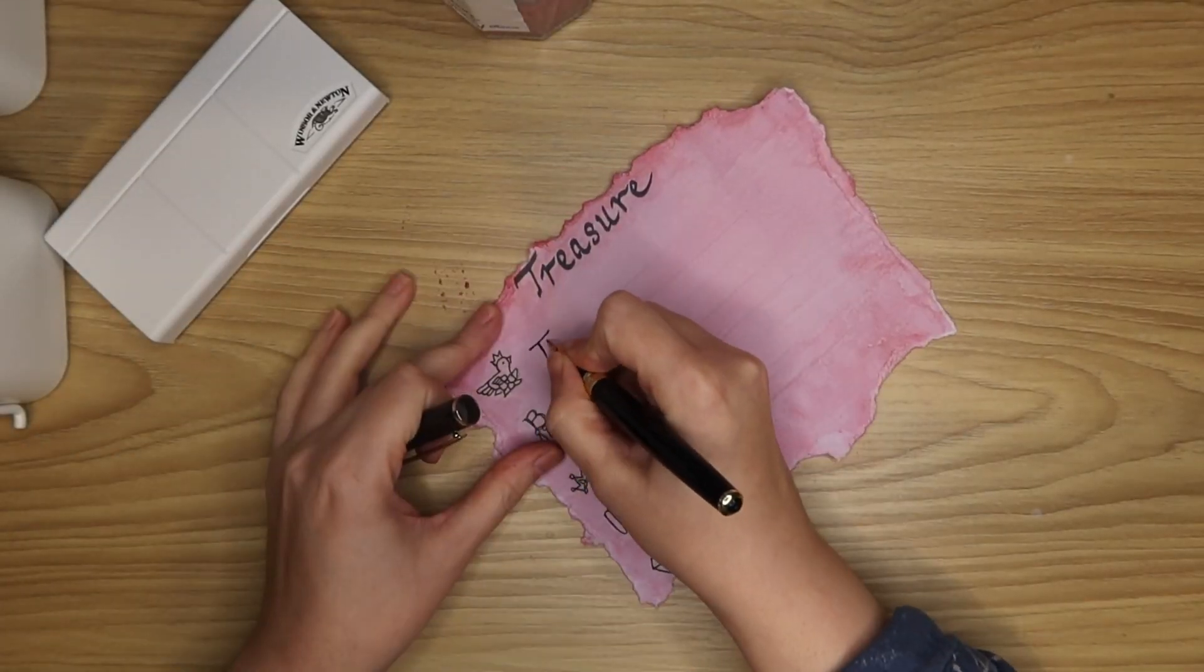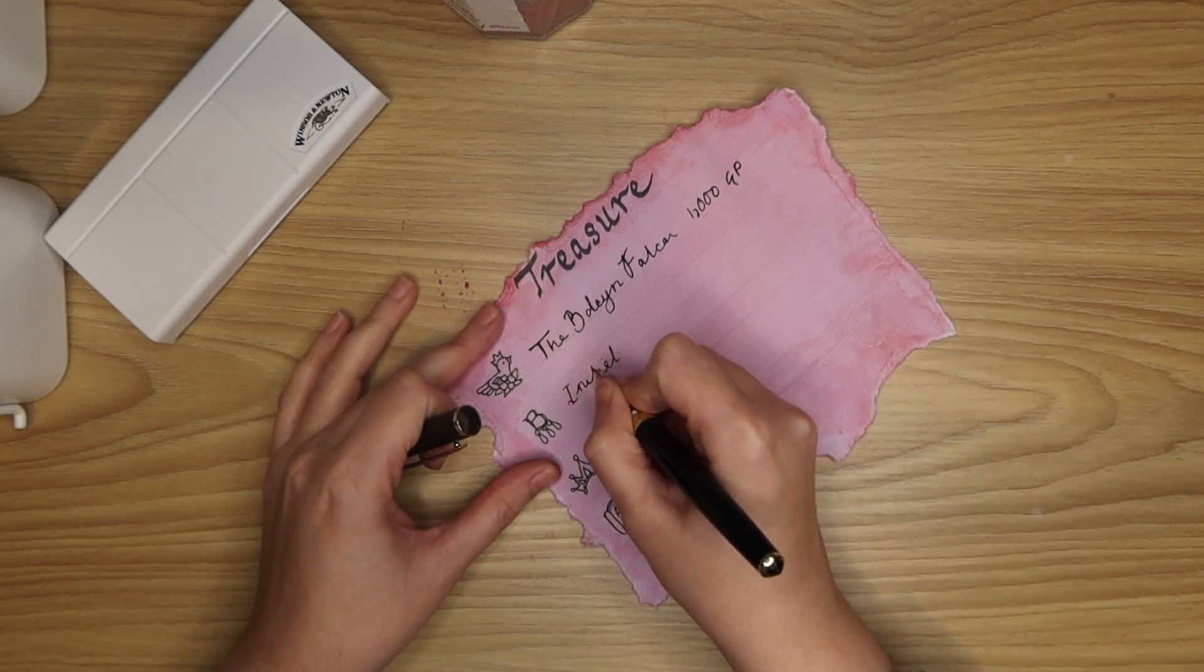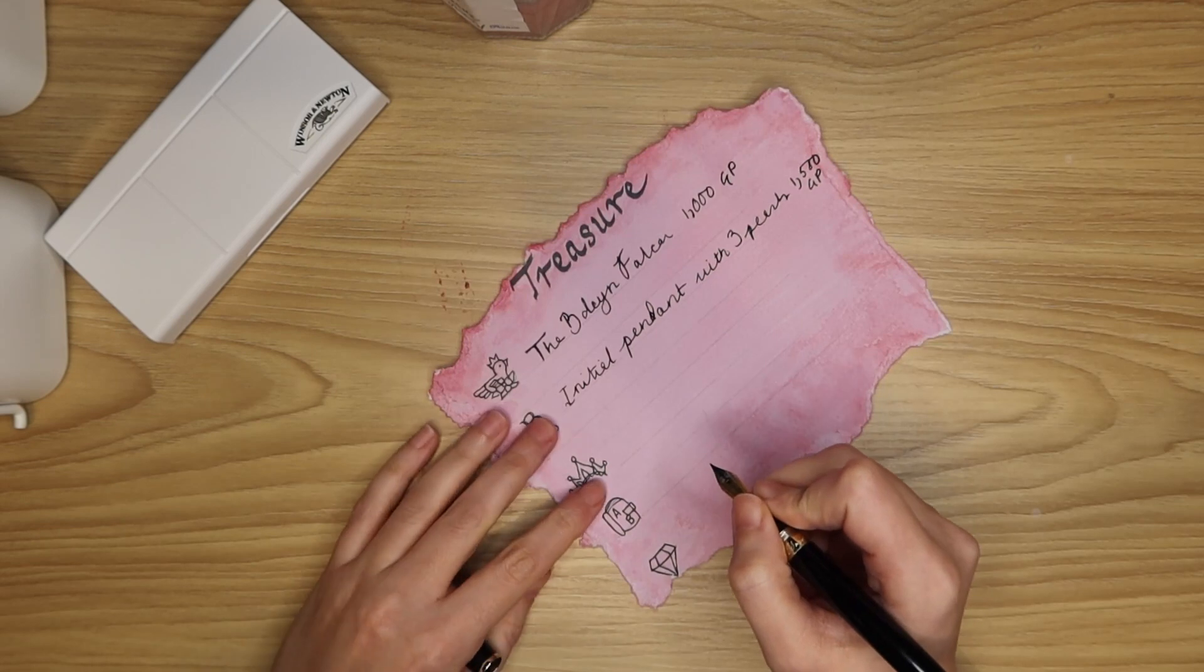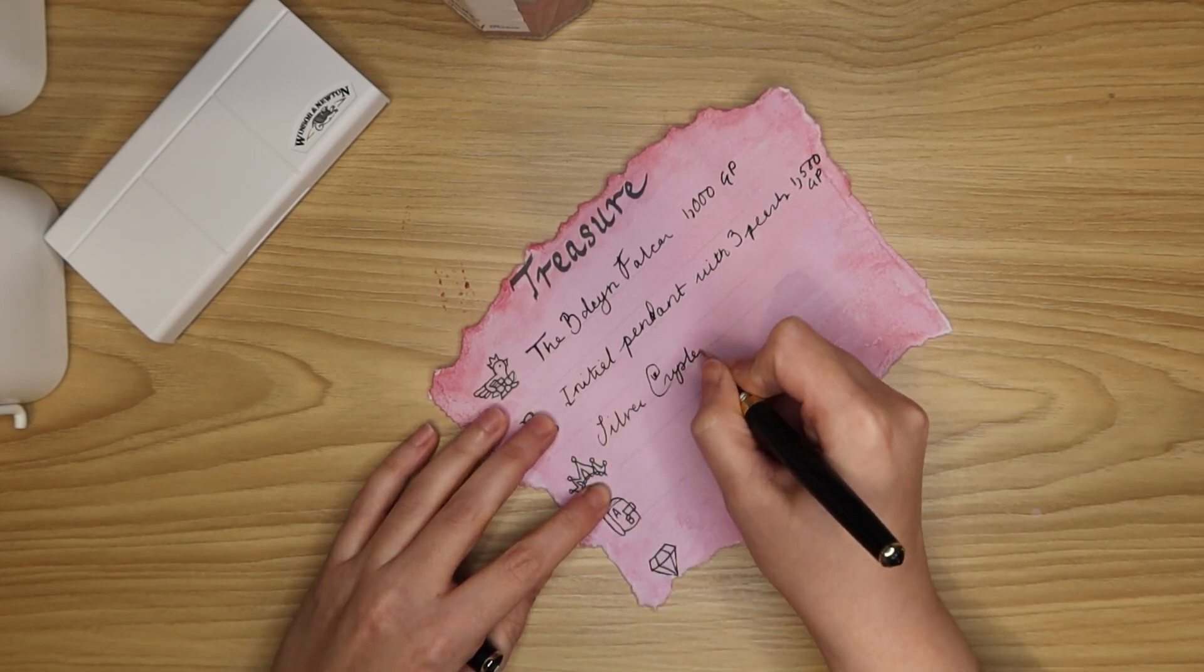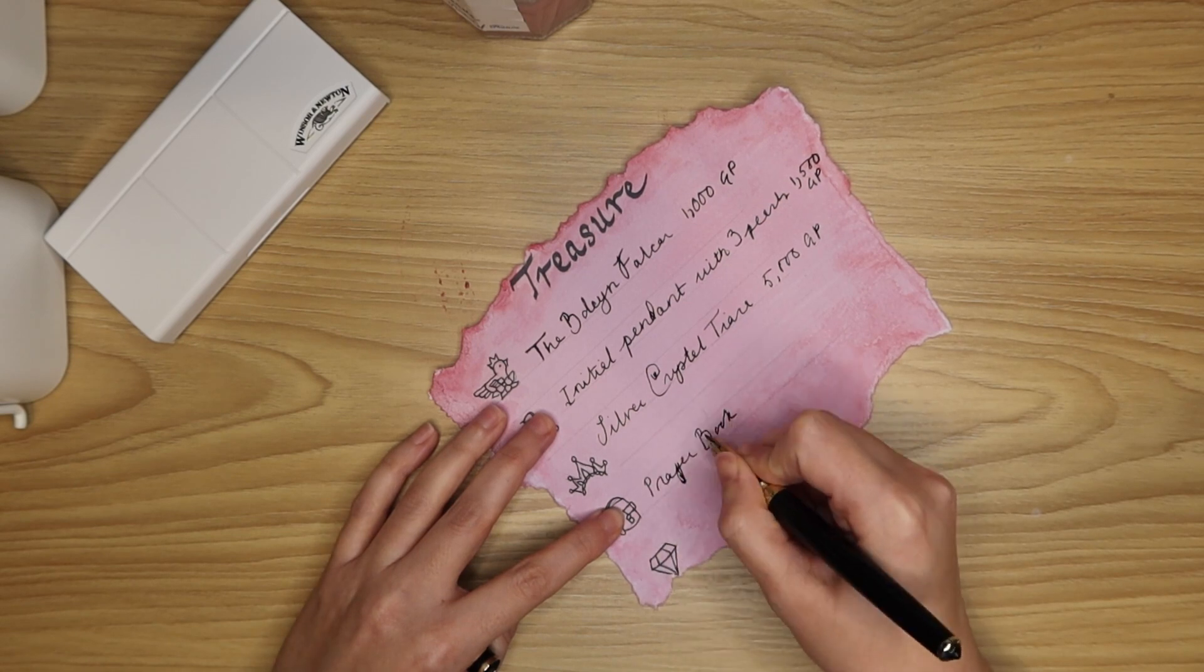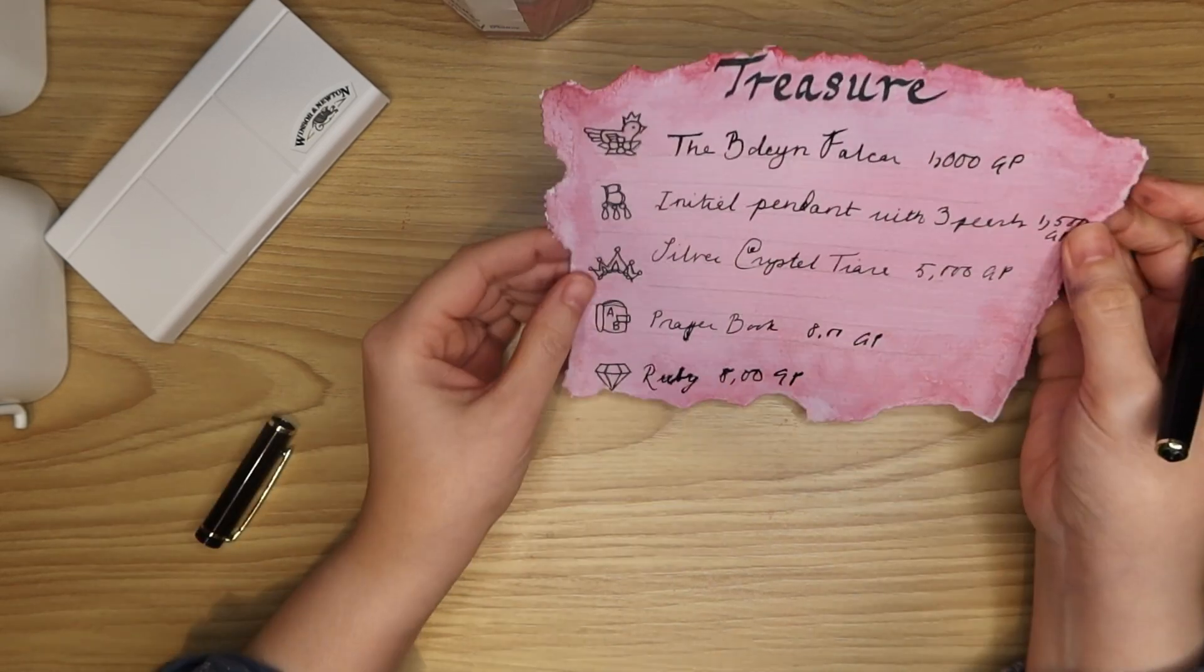Next I'm filling in a brief description of what each treasure is and its worth. Of course because these are items belonging to a queen they will hold significant value which will make them more difficult to find. I'm thinking of setting the game in the Tower of London or Hever Castle. However because the Tower of London is a real life dungeon I think that could be better for the game.